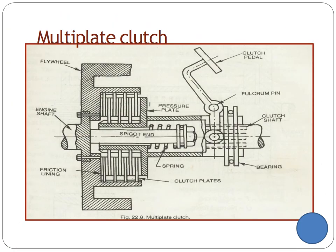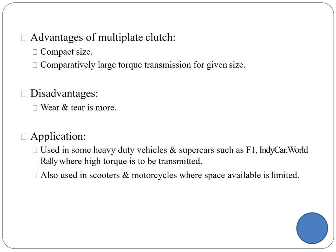Three plates are placed on the clutch shaft, and four are placed on the flywheel — these are the inner drum and outer drum, alternatively placed, so you can slide easily in and out. The multi-plate clutch is compact in size and commonly used in two-wheelers and scooters. It can transmit more power, but wear and tear is more in the multi-plate clutch compared to single plate.